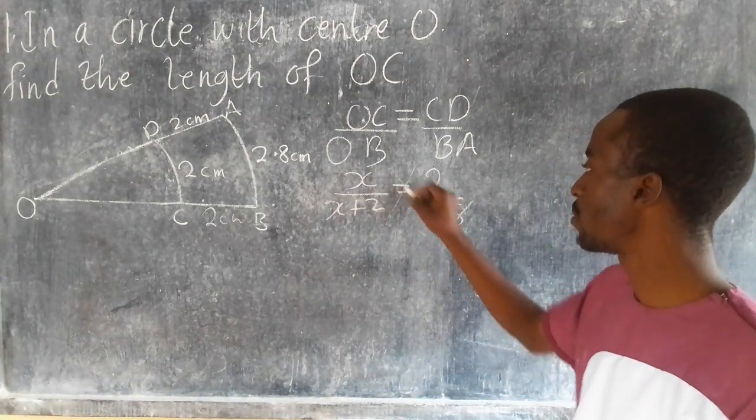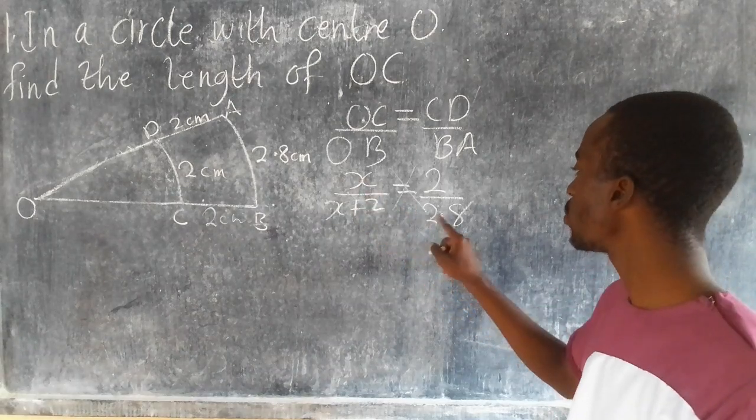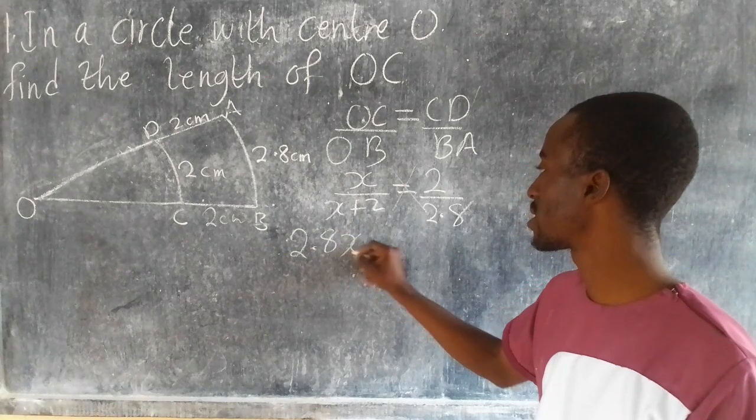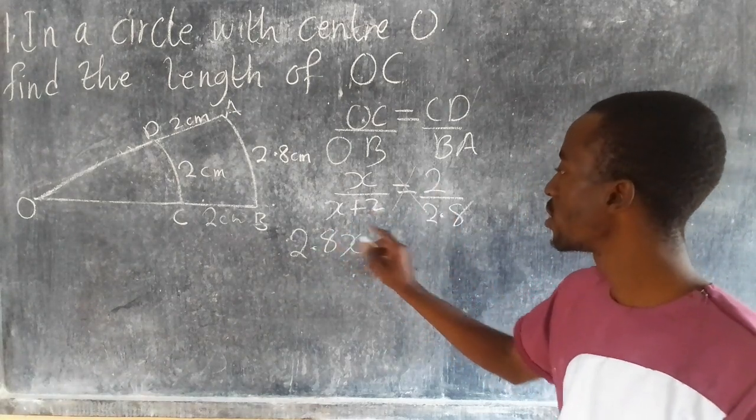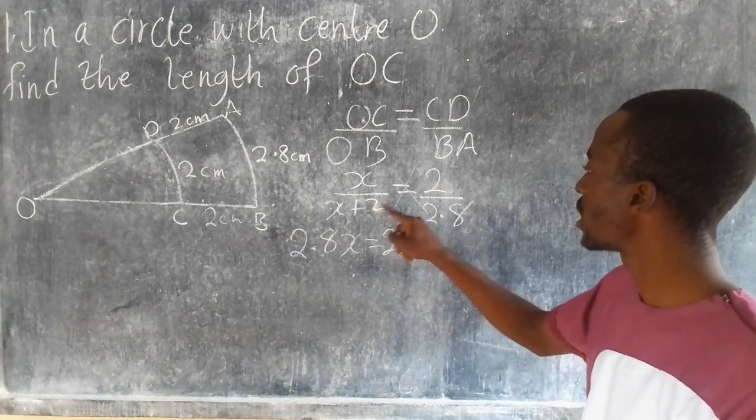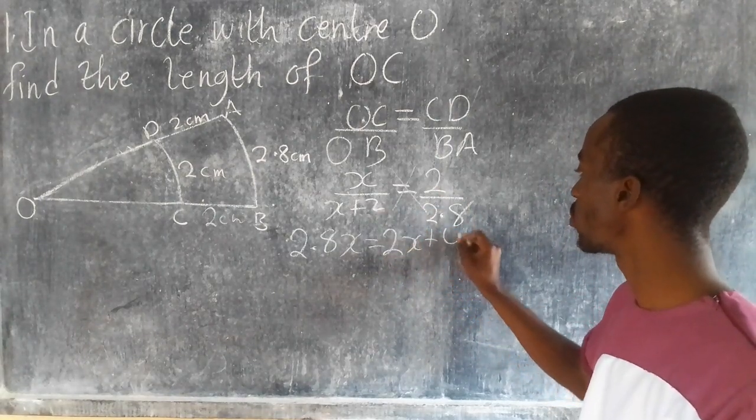Now I'm going to cross multiply. So X times 2.8 gives me 2.8X. 2 times the whole of this gives me 2 times X, which is 2X, and 2 times 2 gives me 4.